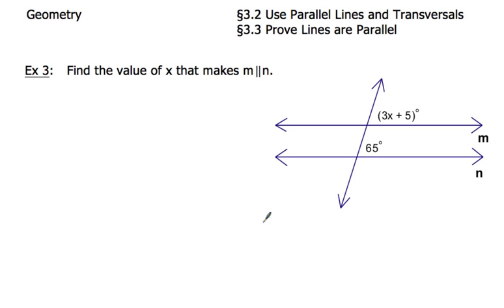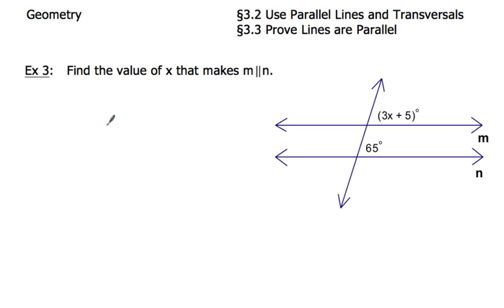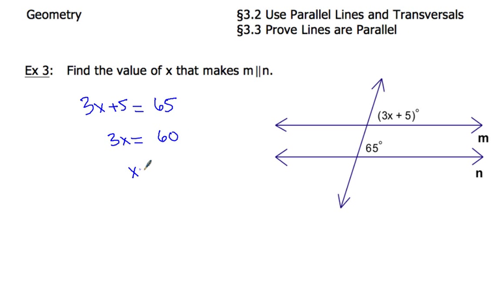Example 3 says: find the value of x that makes m parallel to n. Based on their location, 3x + 5 and 65 are corresponding angles. The two lines aren't parallel yet, but if I find a value of x that makes 3x + 5 equal 65, I can use the corresponding angles converse to say the lines are parallel. So I set them equal: 3x + 5 = 65. Using the subtraction property of equality: 3x = 60. Dividing both sides by 3: x = 20.